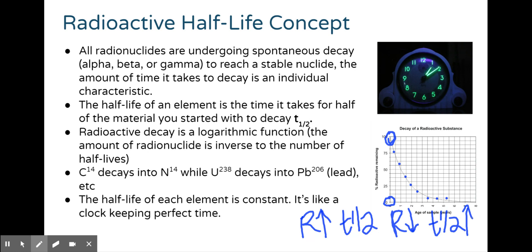Carbon-14 decays into nitrogen-14, while uranium-238 decays into lead-206. The half-life of each element is constant. It's like a clock keeping perfect time, which makes this an individual characteristic. Carbon-14's half-life is different from uranium-238's half-life, but it is always the same for that radionuclide.